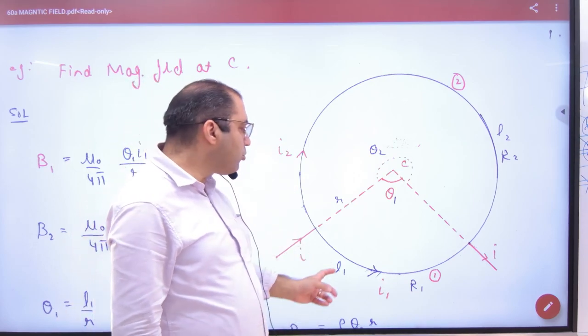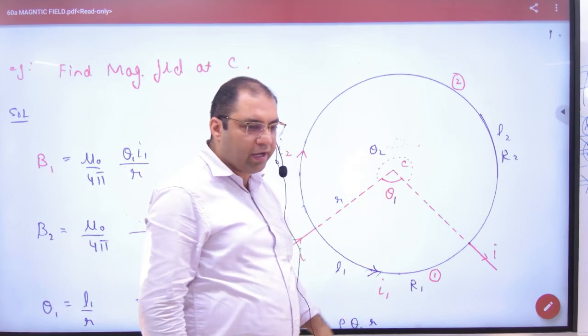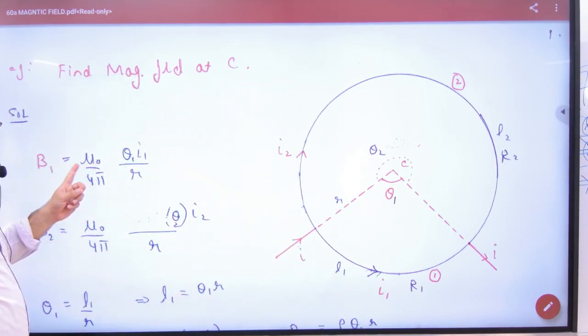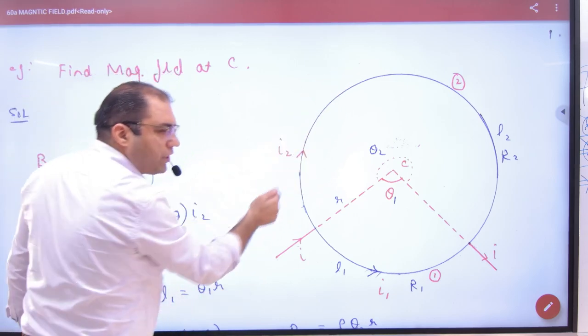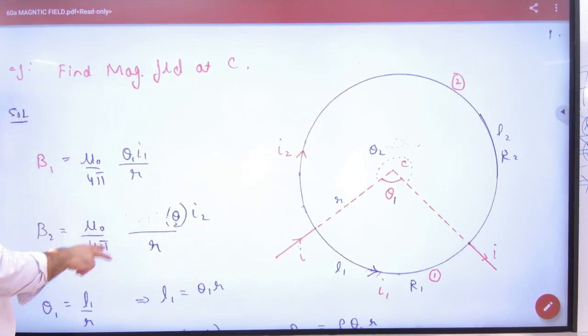But if I ask this, what is B here? What will be the formula? What will we say? Mu not by 4 pi, theta 1 I1 by R. And what will happen in the theta 2? Mu not by 4 pi, theta 2 I2 by R. Clear?